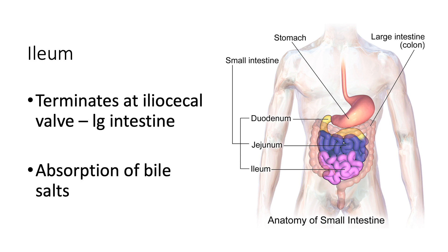The last section of the small intestine is the ileum, and the ileum terminates at the ileocecal valve — ileo because it's the ileum, and cecal because it connects with the cecum of the large intestine. The ileocecal valve is a sphincter that controls the entry of materials from the small intestine into the large intestine. Within this last section, we primarily see the absorption of bile salts, and some nutrient absorption continues following the jejunum.